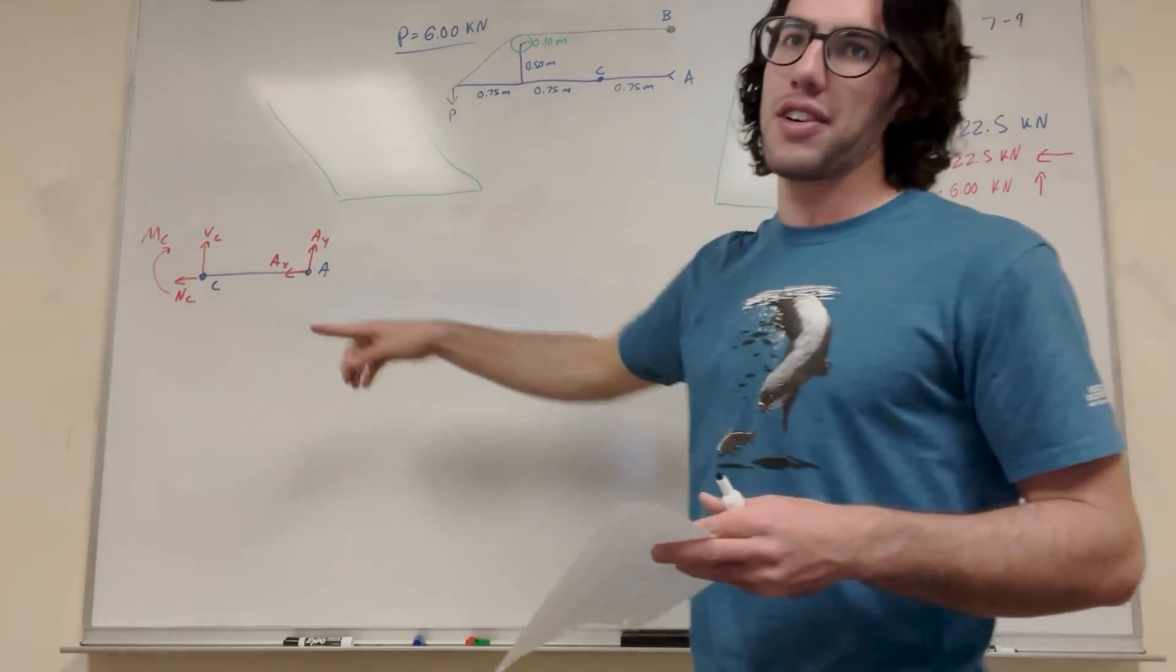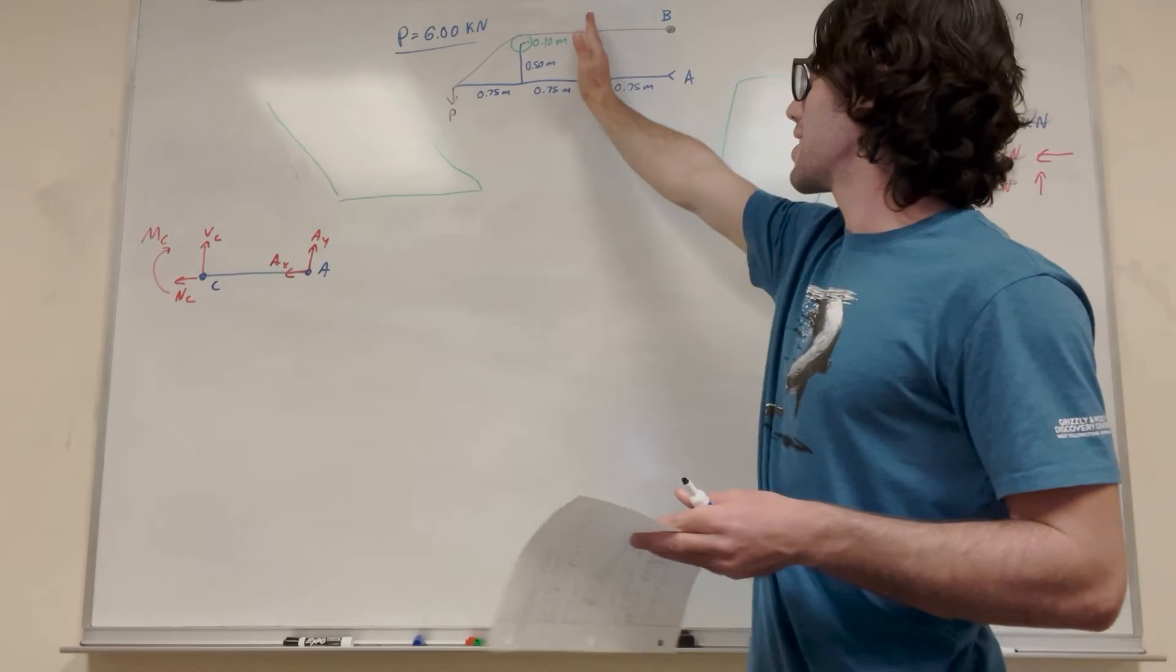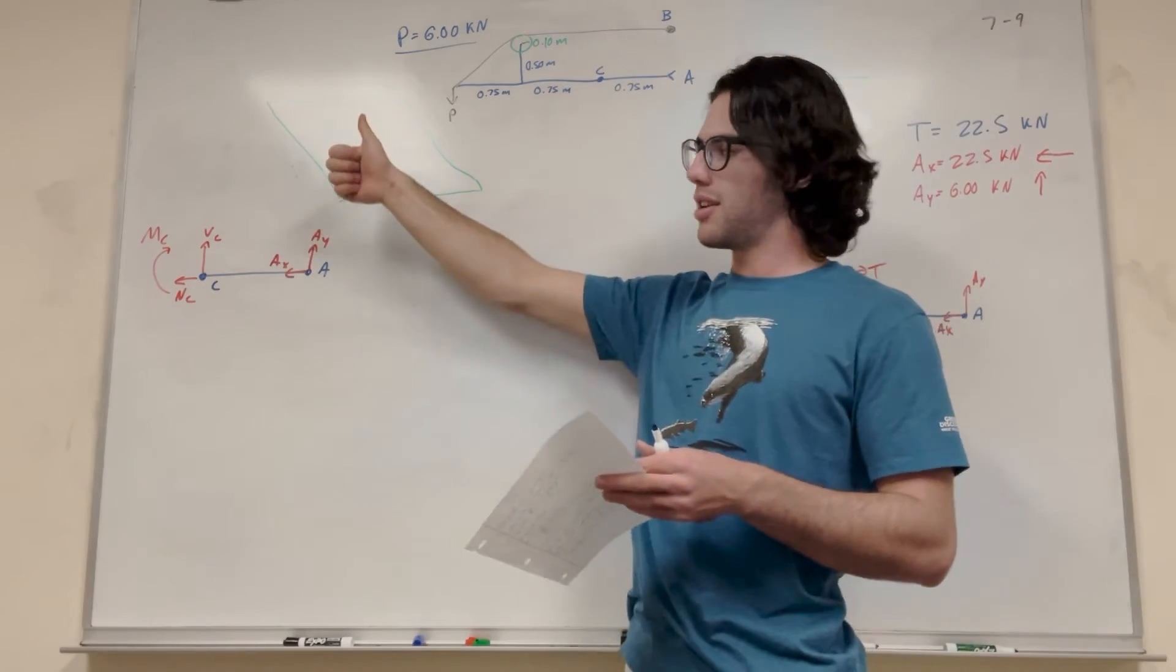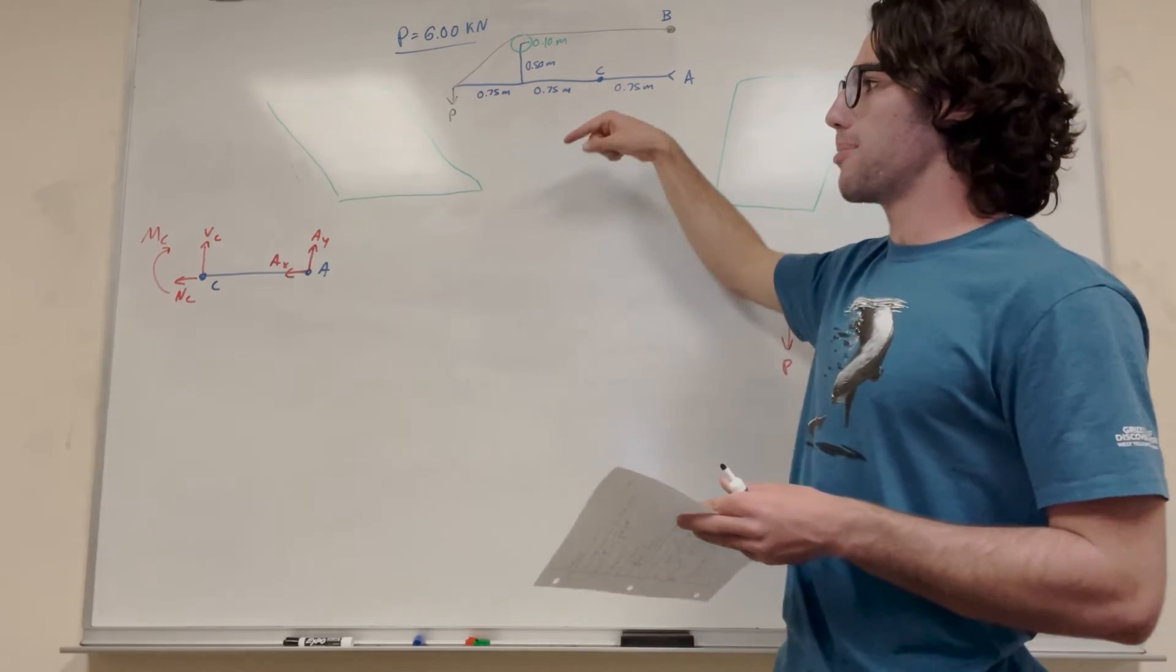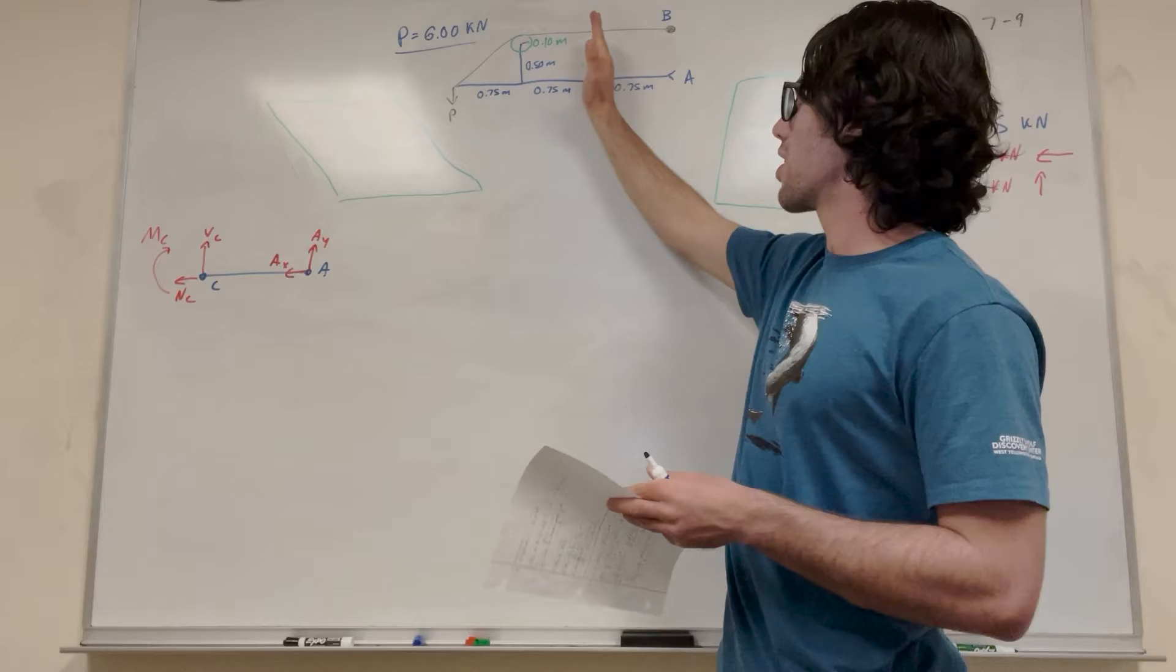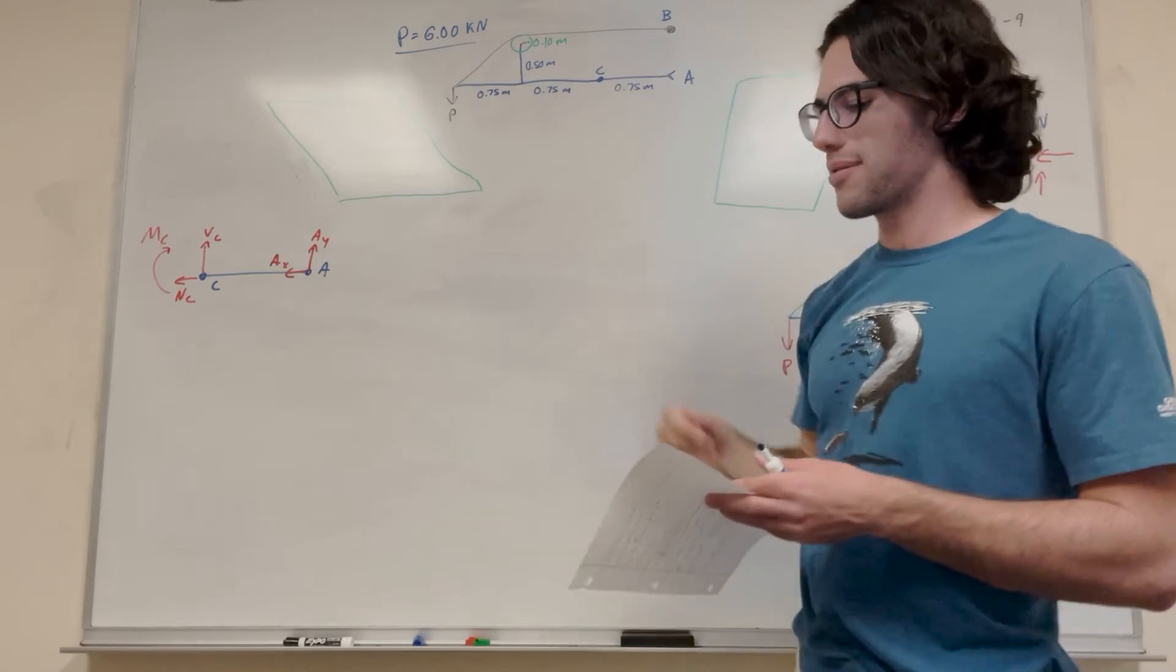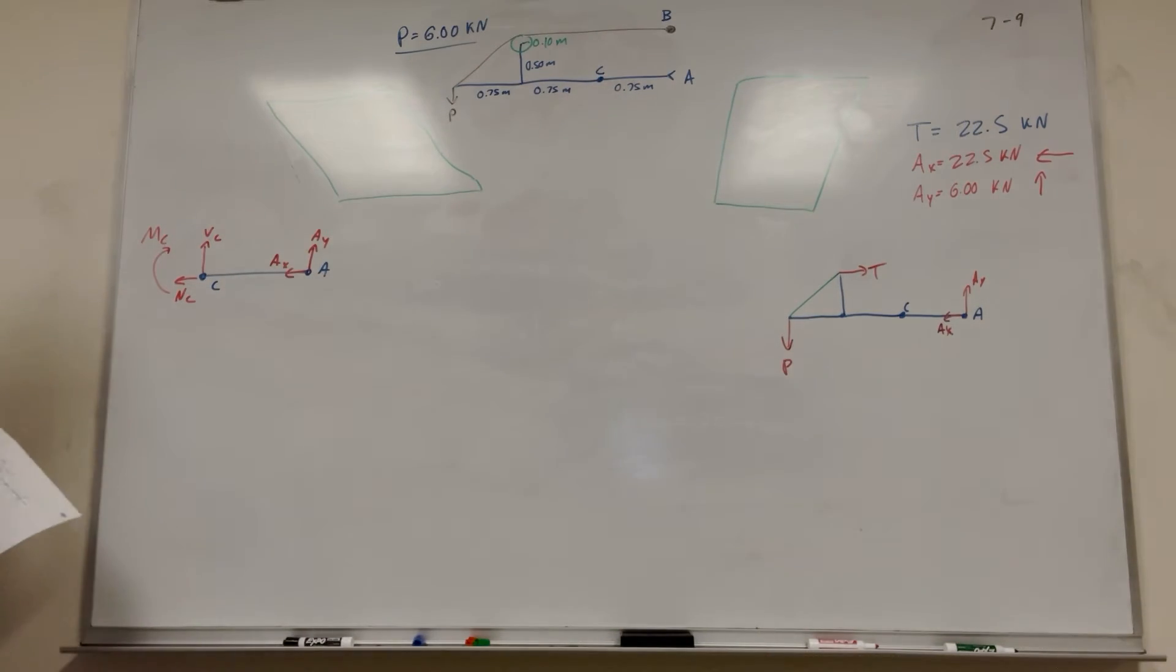Okay, so finally we can go back to what we made over here. Hopefully you didn't forget. So we took the cut at C. We said we're going to cut it at C and everything to the right is what we're looking at. Our shear force points up. Our normal force points out. And our moment around C is going to point clockwise because we cut off everything to the left. We cut off to the left. That moment is going to go like that. So what should we find first? Well, let's find normal force. That's what's first.